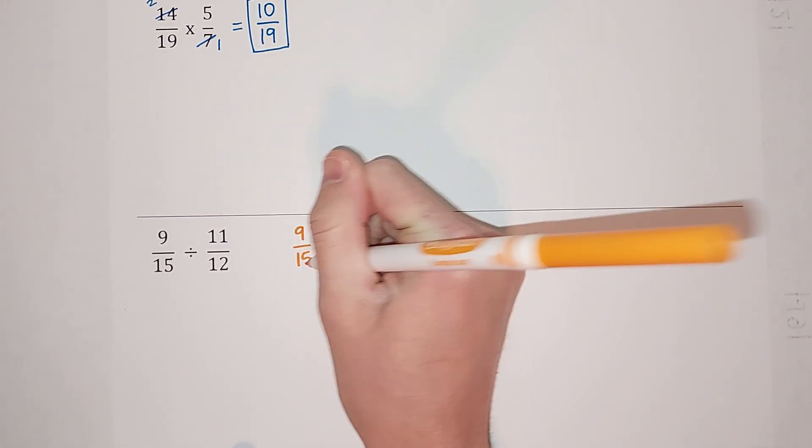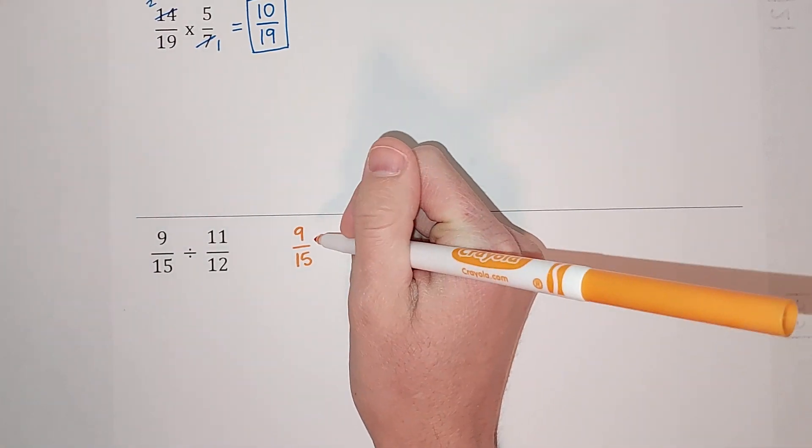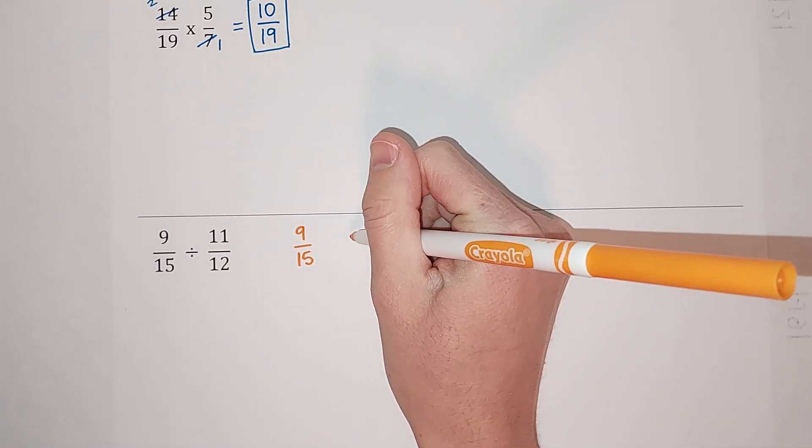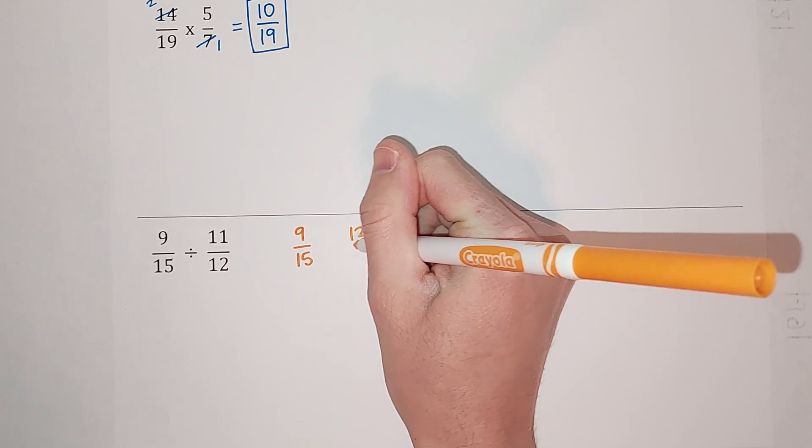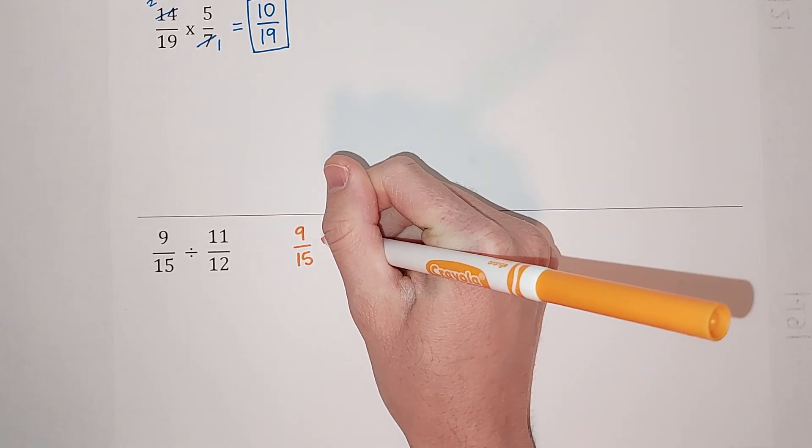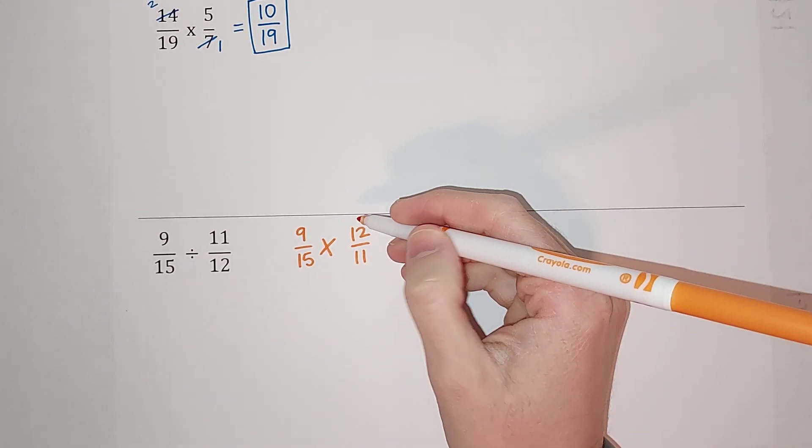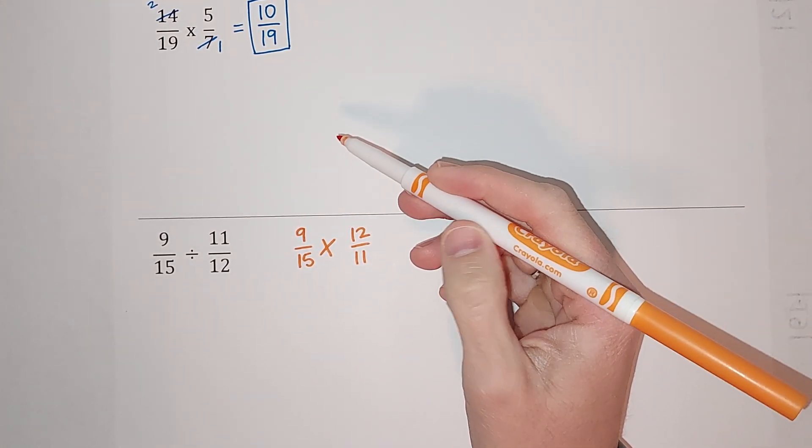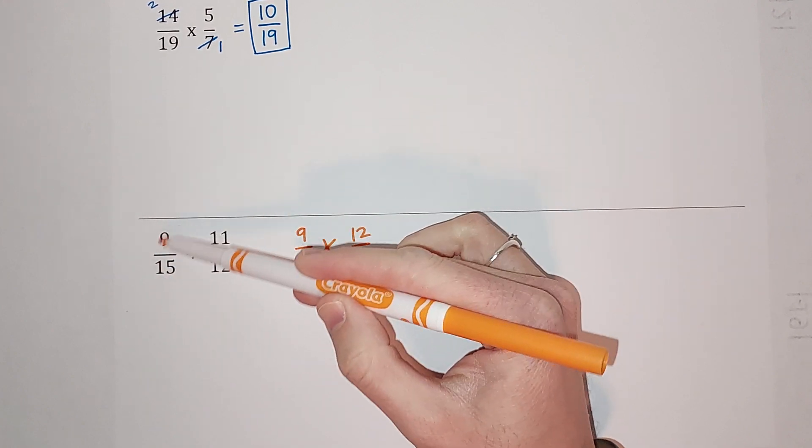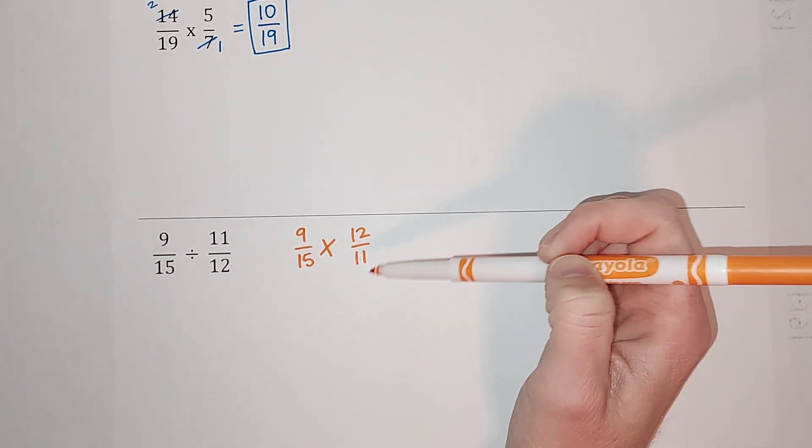So we take the 9/15, we flip our second fraction so it's 12/11, and we multiply. Denominators do not have to be the same. I'm gonna check and see if anything cancels, just because that's easier in my opinion. Also, you can't cancel yet here, it's when it's multiply.